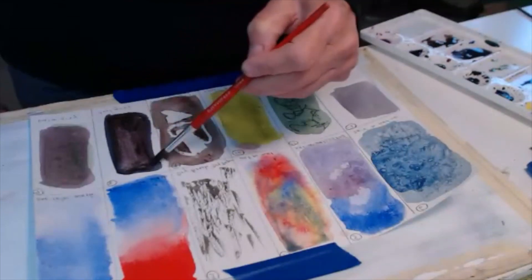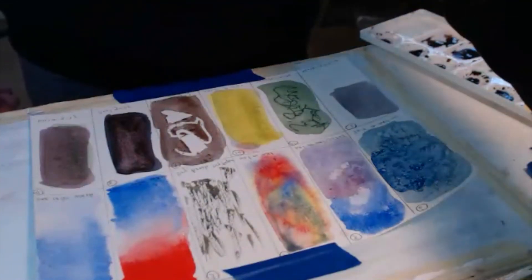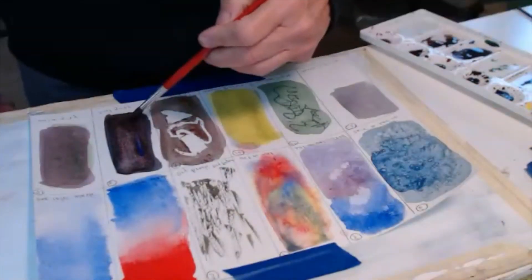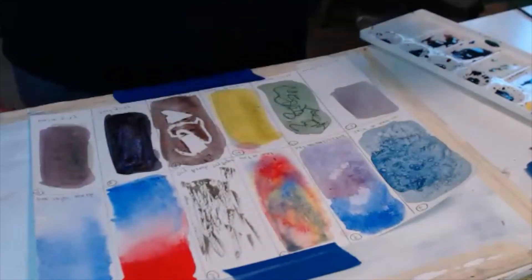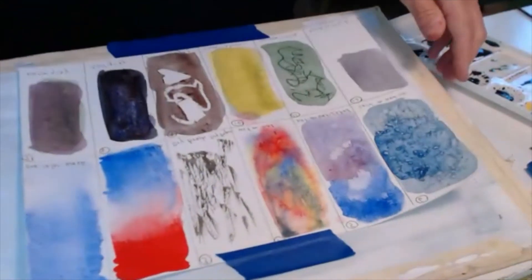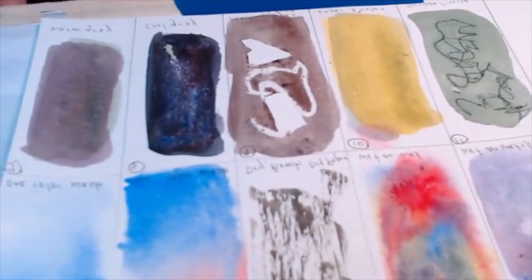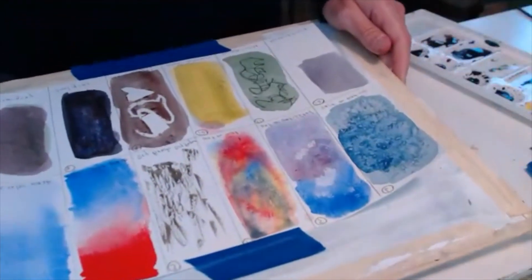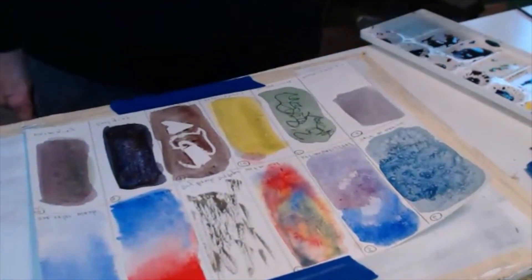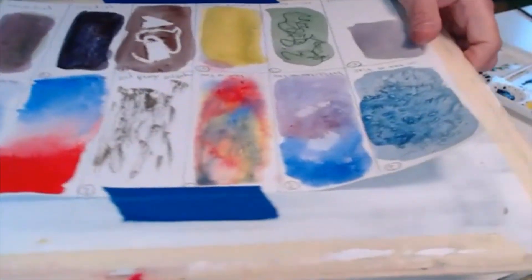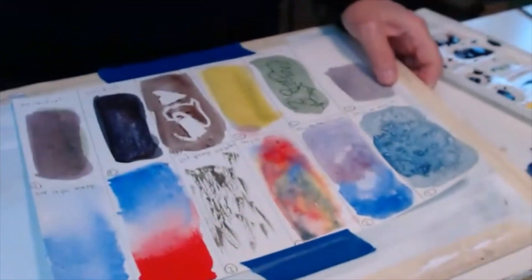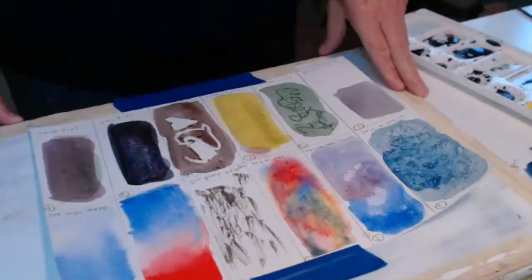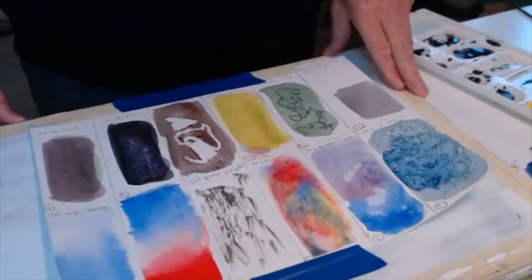Now the orange is dominating a bit so I'm just going to go back a little bit with the blue. That makes a very dark blue gray. Okay, so those are all of the techniques. Enjoy trying them out. Also, here's how the salt came out from the earlier one. All right, have fun making these samples.